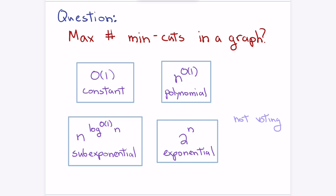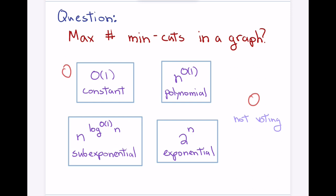Forcing everyone to vote: who thinks there's at most a constant number of minimum cuts? Who thinks polynomial? About 62 percent. Sub-exponential? And exponential?